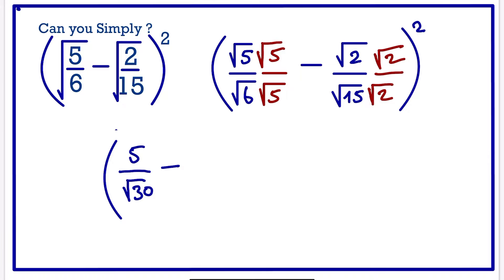Minus, we are going to have root 2 times root 2 is 2 over root 30, all square.